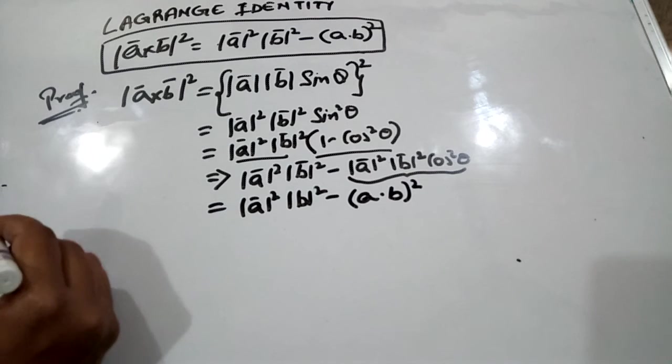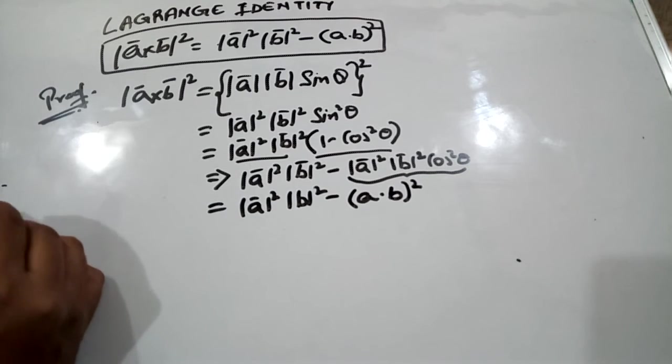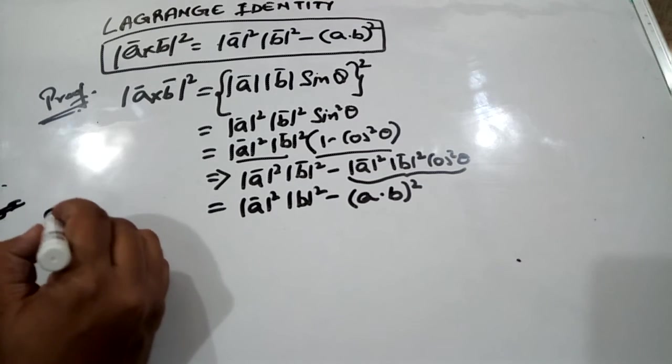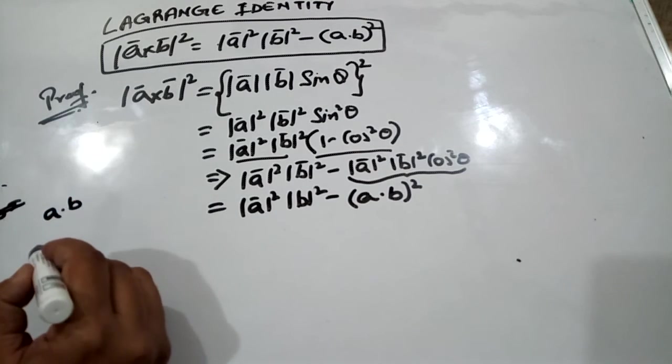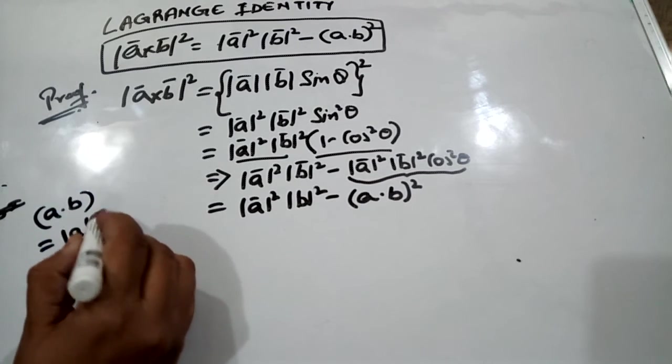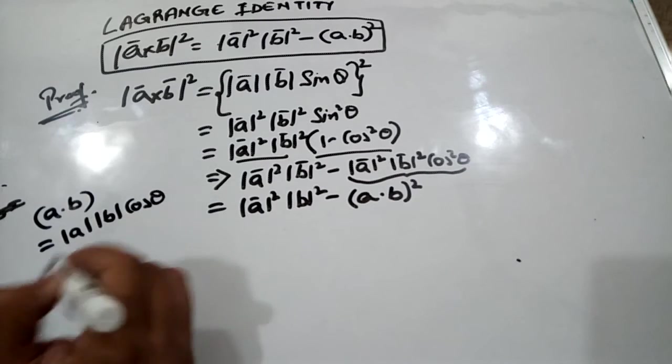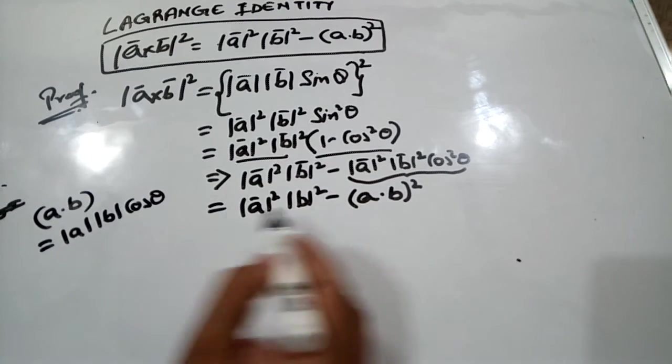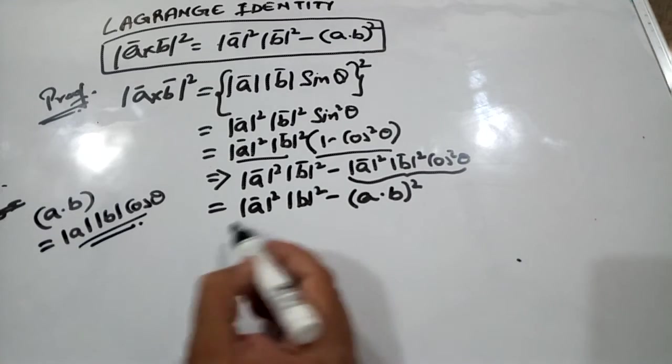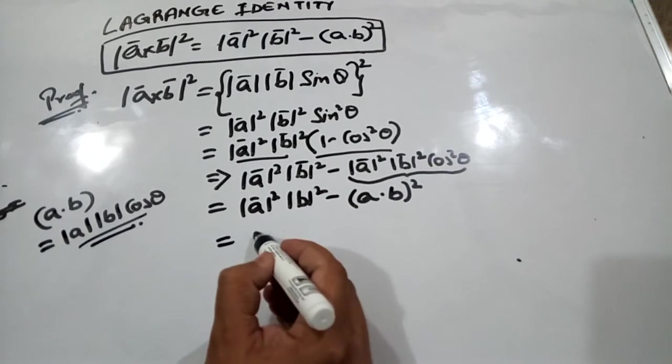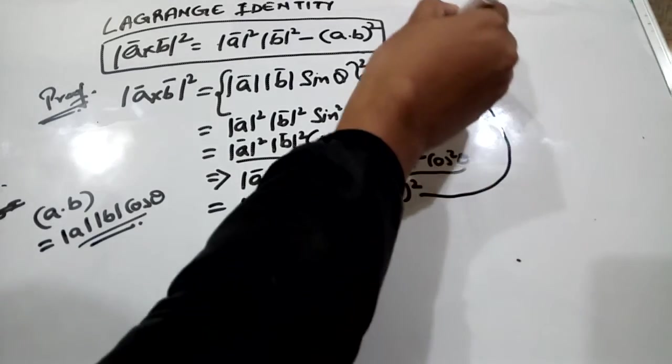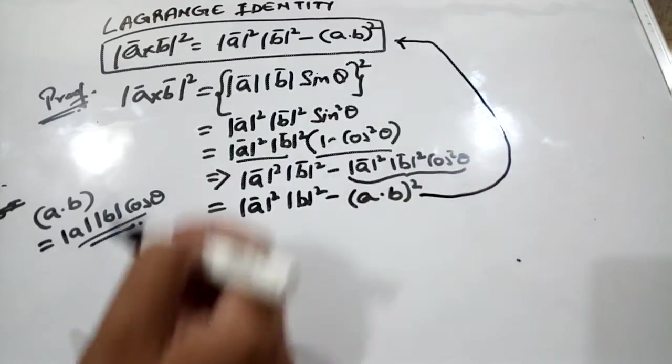The reason is we know that a dot b is equal to mod of a mod of b into cos theta. Therefore we are using this identity over here. Therefore this equation is same as this part.